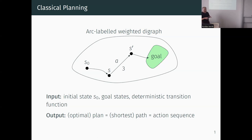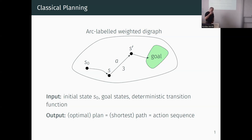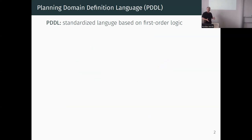To make everything uniform so people can compare their solutions, the planning community developed a standardized language called PDDL, where you can specify your input. Almost all people working in that community use this language. Their solutions are domain-independent because the input is unified - similar to SAT solvers where the input is a Boolean formula and you look for a satisfying evaluation.